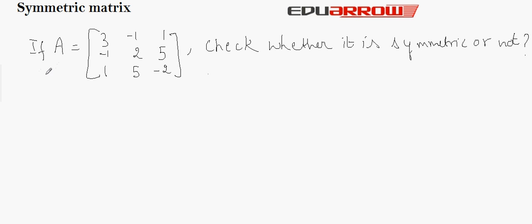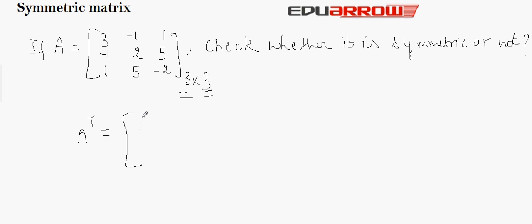Now let us see through an example. Here in this example, it is given that A is a matrix and we have to check whether it is a symmetric matrix or not. The order of A is 3 by 3. Since the number of rows is equal to the number of columns, it is a square matrix. Now we will find out the transpose of A, that is, we will interchange the rows into columns and columns into rows.